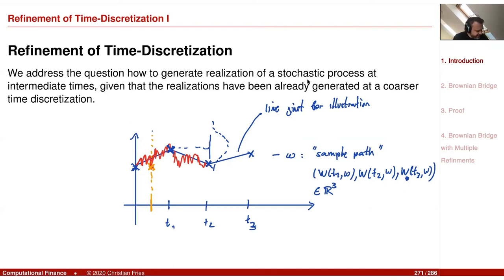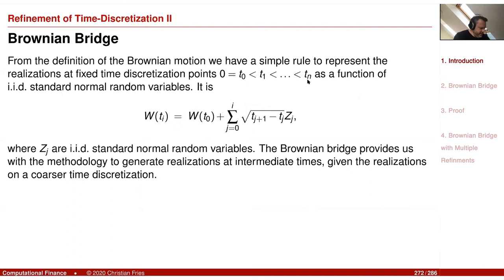This red line here is the true path of the Brownian motion. The answer to this question is called the Brownian bridge. We have two points and we would like to create a Brownian motion that is bridging these two points.